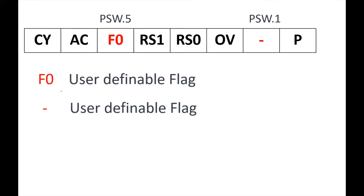The next flags are user-definable flags. There are two: F0 and the dash bit. F0 corresponds to PSW.5 while the dash corresponds to PSW.1. These flags can be used by the user according to their choice, and are used to store a single bit of data.